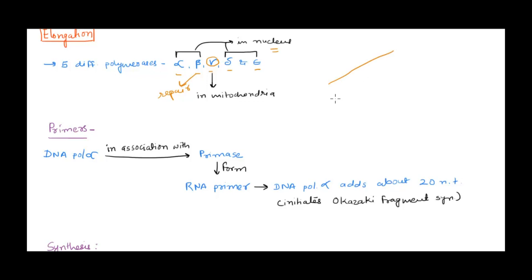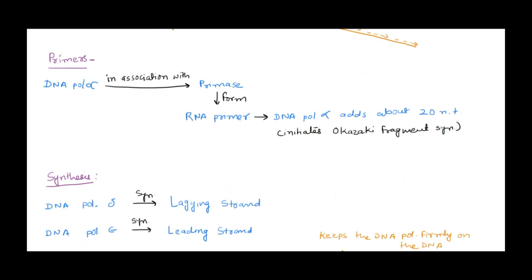The leading strand is synthesized continuously, while the lagging strand is synthesized in small fragments called Okazaki fragments because DNA polymerase always works in the 5' to 3' direction. DNA polymerase also cannot directly start synthesis — it needs a pre-existing primer. In prokaryotes, primase formed the RNA primer. Similarly in eukaryotes, a primase enzyme synthesizes the RNA primer, but the difference is that DNA polymerase alpha is associated with the primase.